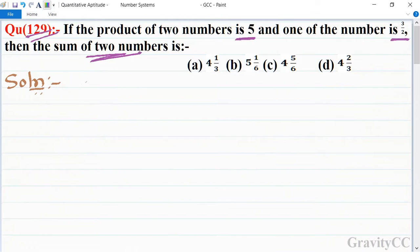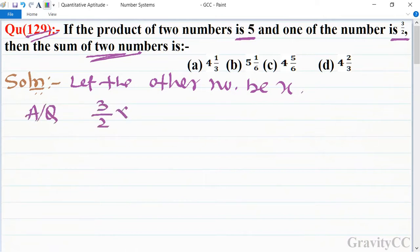So first, let the other number be x. According to the question, first number is 3 upon 2 into other number is x, so is equal to 5. Therefore, x is equal to 10 upon 3.